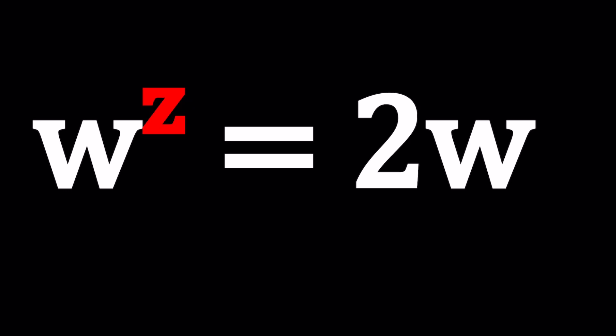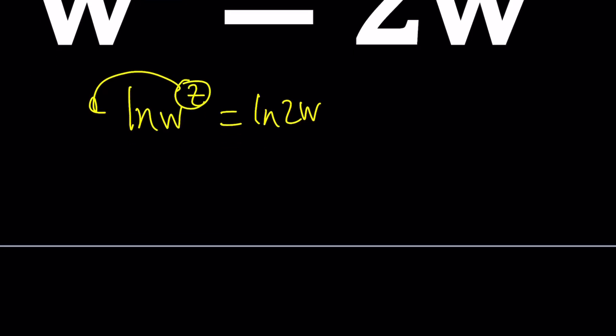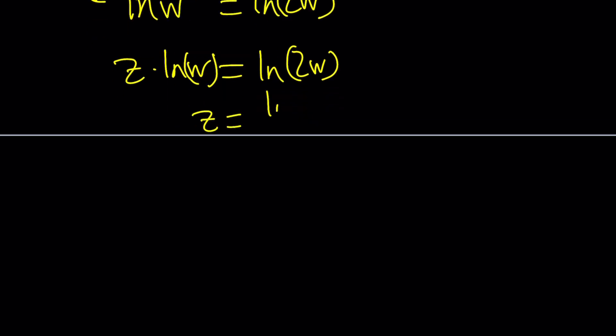Okay we have something like this w to the z equals 2w. What's your first thought? Your initial thought is probably why don't we just ln both sides. Let's do it. Okay ln w to the z equals ln 2w and then you can kind of move the z to the front z times ln w equals ln 2w and I probably need to write this in parentheses to avoid any confusion.